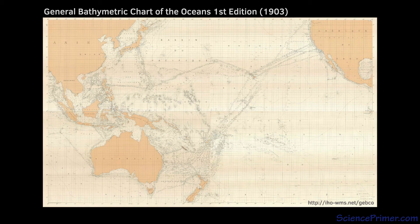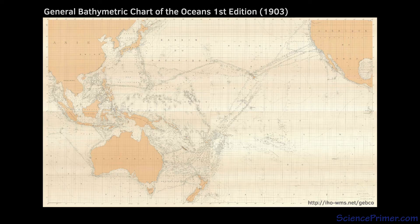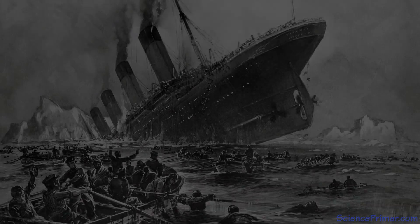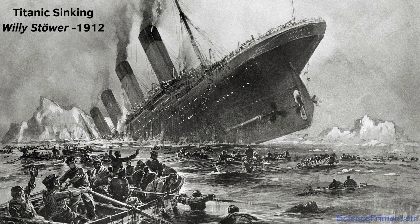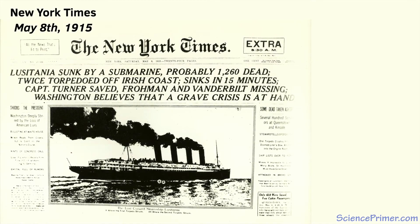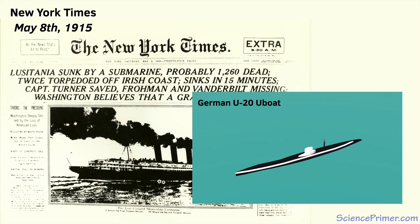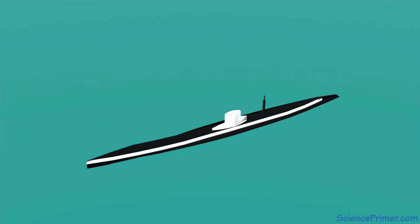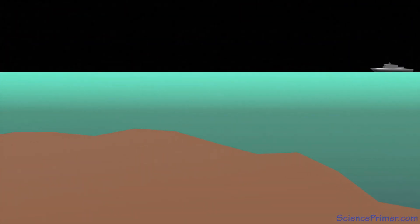Tools for mapping the seafloor took a giant leap forward at the beginning of the 20th century, when the sinking of the Titanic by an iceberg in 1912 and the advent of submarine warfare in World War I stimulated the development of echo sounders as a way to identify underwater hazards. Above the water, navigation and mapping are possible using visible light and other forms of electromagnetic energy because these forms of radiation travel great distances in air. Electromagnetic energy is less useful underwater as it is rapidly scattered and absorbed by water.